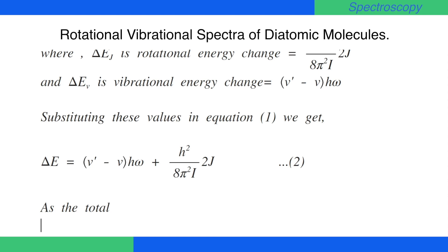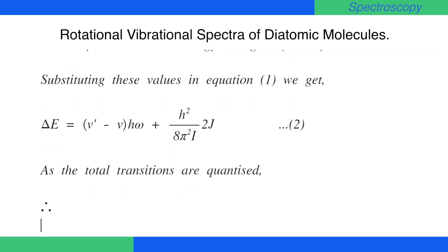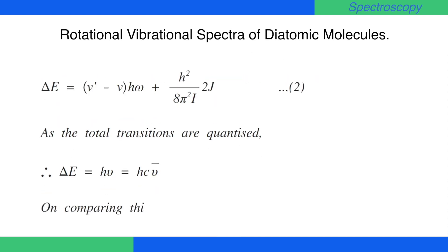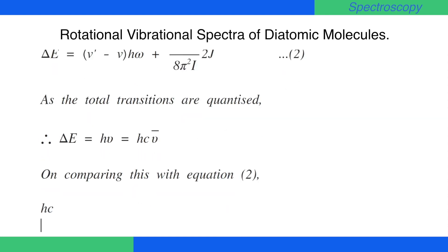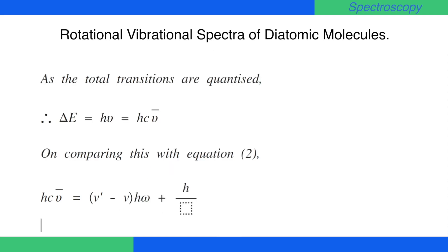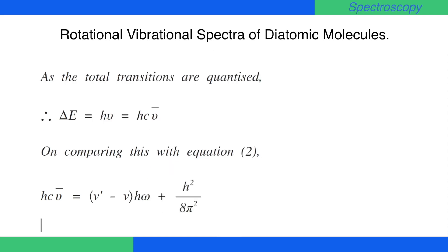As the total energy in the transition is quantized, therefore we can say ΔE = hν = hcν̄. On comparing this equation with equation number 2, we get hcν̄ = (v' − v) · hω + h² / (8π²I) · 2j.